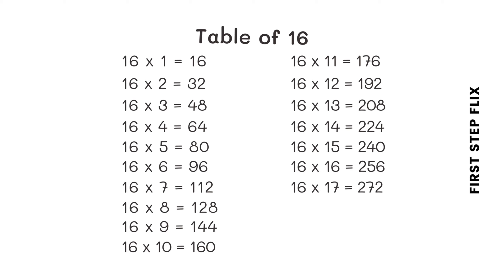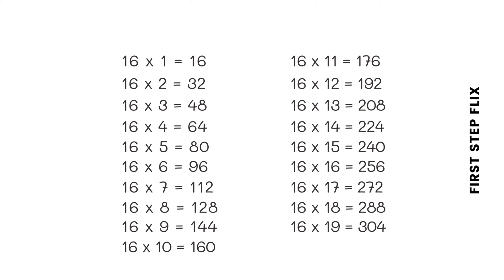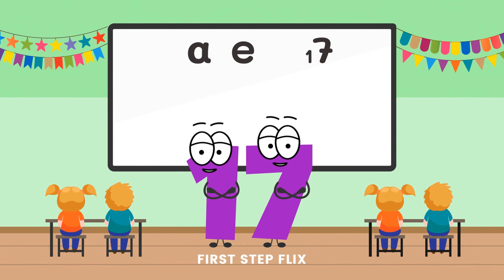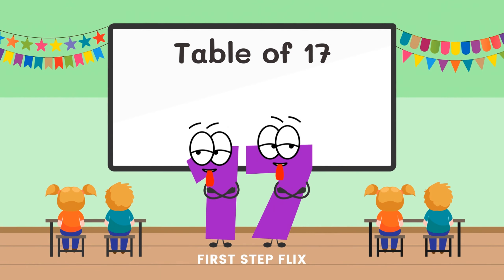16 seventeens are 272. 16 eighteens are 288. 16 nineteens are 304. 16 twenties are 320.